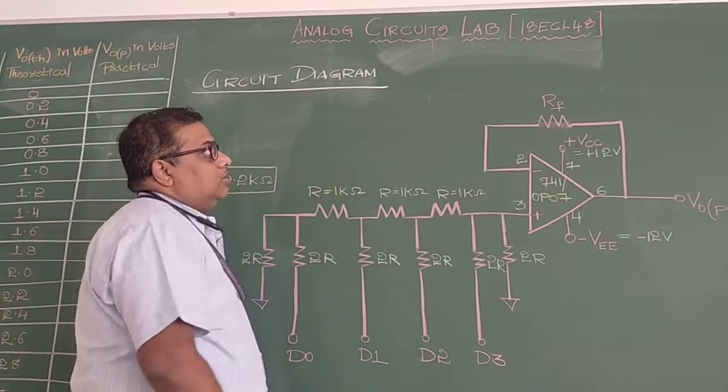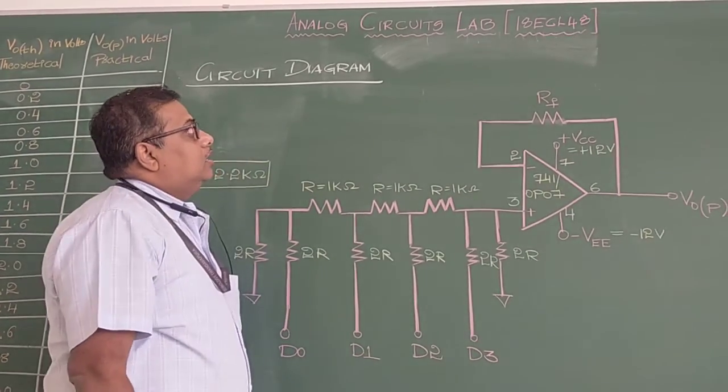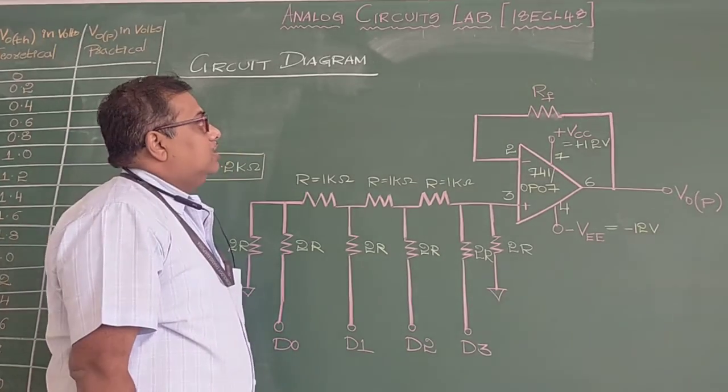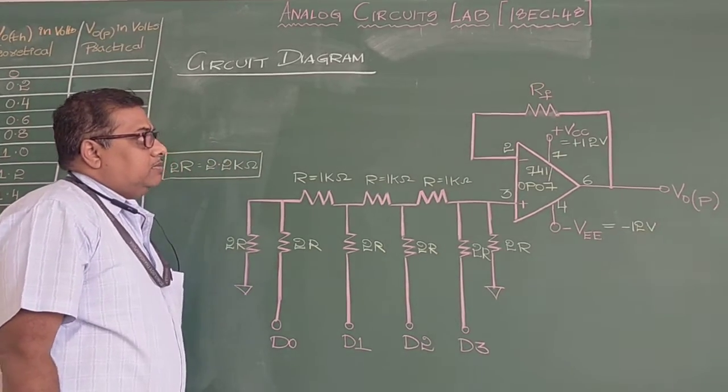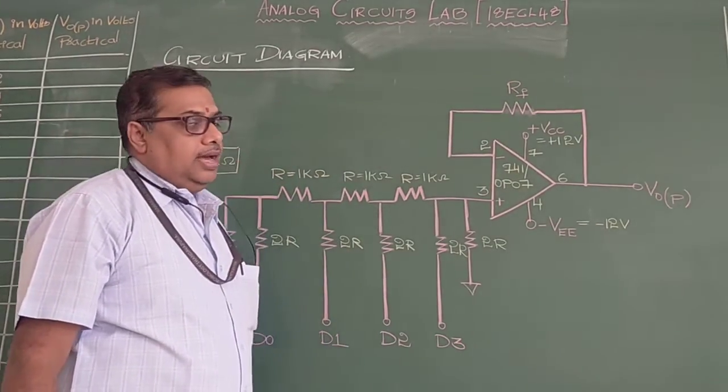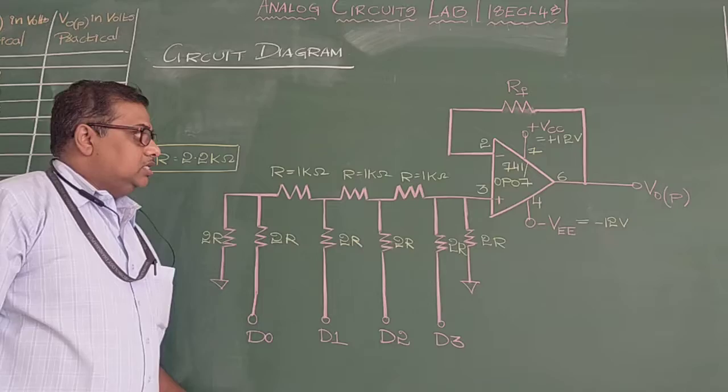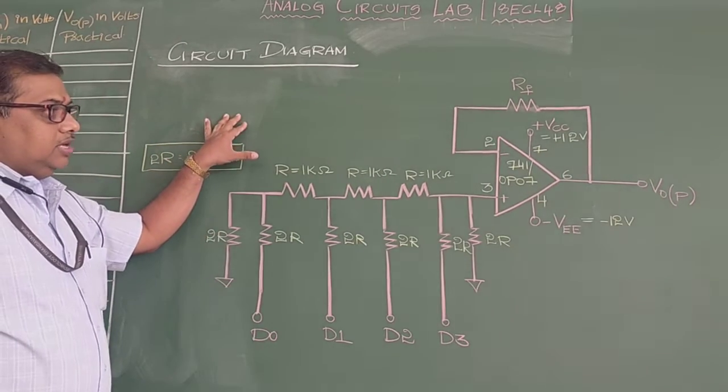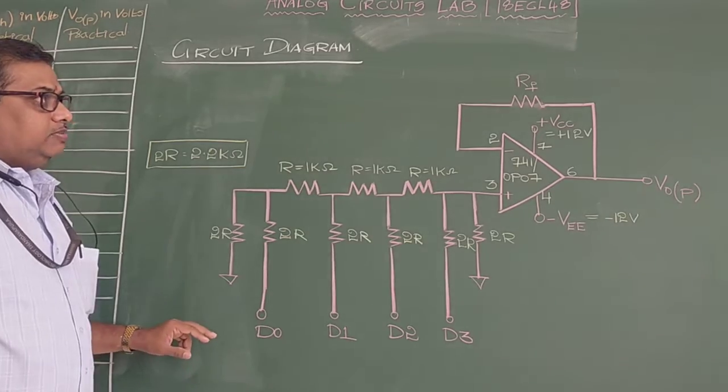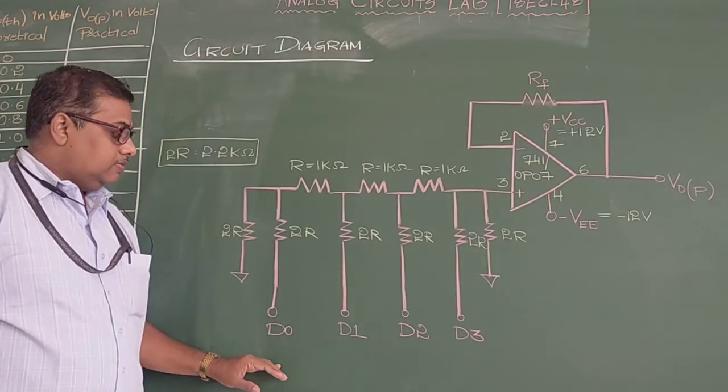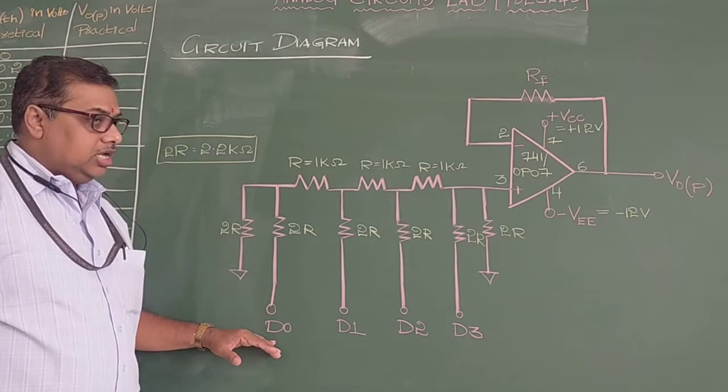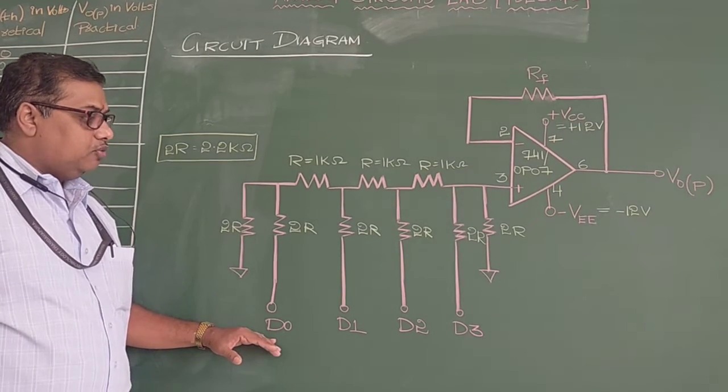Today I will be explaining one of the experiments in your analog circuit lab. It is CL48, digital to analog converter using op-amp. First let us go through the circuit diagram. Since it is an op-amp, the experiment is digital to analog converter, the input for this experiment is digital input. We are using 4 bits.